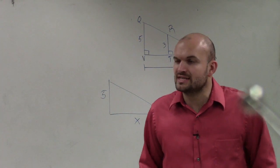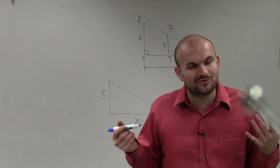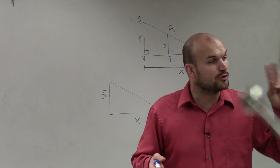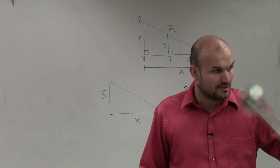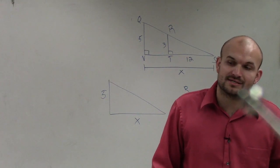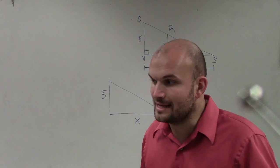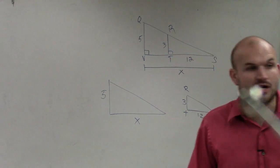So to prove similarity, we either need to prove that two of the angles are the same, right? Or we can show that not only are the angles the same, but also that their side lengths are congruent.